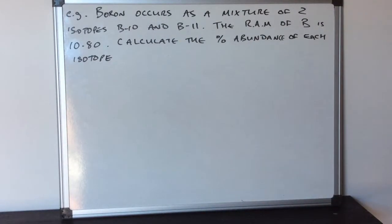We've got boron occurs as a mixture of two isotopes, B-10 and B-11. The relative atomic mass of boron is 10.80. Calculate the percentage abundance of each isotope.